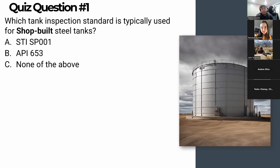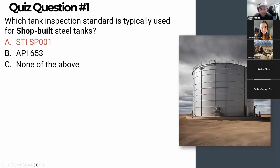Question one: which tank inspection standard is typically used for shop-built steel tanks? The answer is STI — Steel Tank Institute SP-001. Congratulations to Cameron, who sent in the first correct answer. Shop-built steel tanks use STI SP-001, while API 653 is generally used for field-erected tanks.